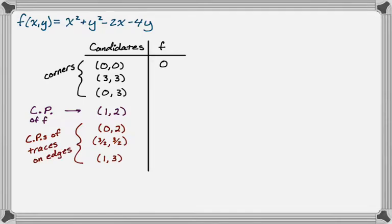And now what we're going to do is we're going to evaluate the function at each of these. So (0, 0) definitely just gives 0. (3, 3), that's 9, plus 9 is 18, minus 6 is 12, minus 12 is another 0. (0, 3), so 0, 9 minus 12 is -3. (1, 2) gives me 1 + 4 is 5, minus 2 is 3, minus 8 is -5. (0, 2), I mean, you don't need to listen to me plug all these in, but I'm doing it anyway. So it's 0, 4, subtract 0, minus 8, -4.